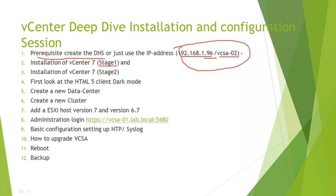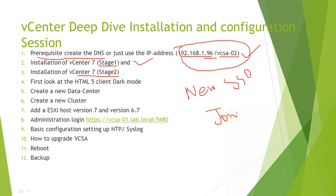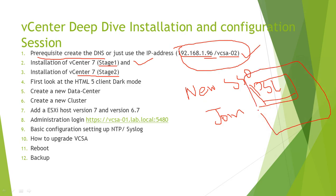Stage one is completed. In stage two there are two things: if you have a greenfield and it's a brand new vCenter, you create a new SSO domain; if you already have an existing vCenter Server you want to join this new vCenter to that SSO. Also remember, if you have an external PSC it will become an embedded PSC within the VCSA. Click Continue to proceed.